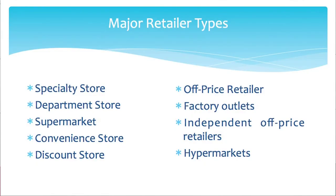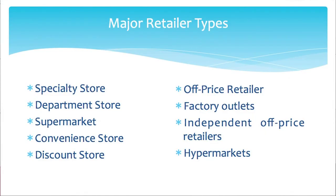Then comes the department store. This kind of store has several product lines, typically clothing, home furnishing, and household goods — where you get different kinds of products in one outlet. Then comes the supermarket. This kind of store has relatively large, low-cost, low-margin, high-volume, self-service operations, designed to serve total needs for food, laundry, and household items.